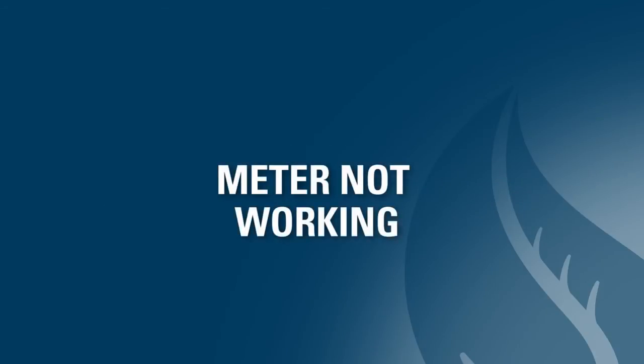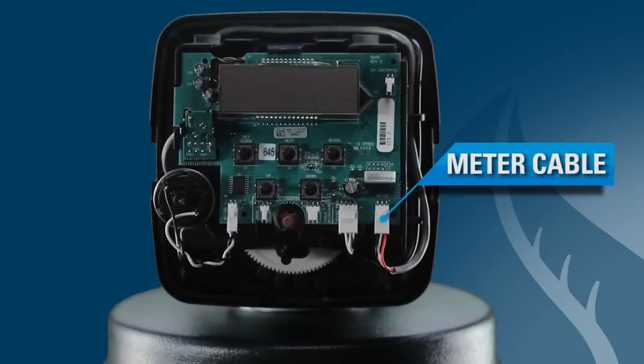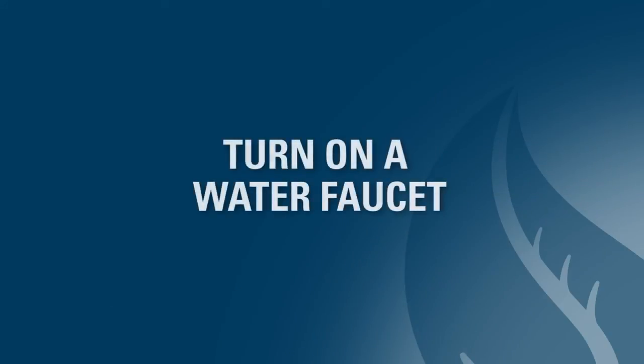Finally, confirm that the valve's flow meter is working. To do this, first ensure that the meter cable is securely attached to the PC board. Next, check to see if the meter is registering water flow. The best way to do this is to turn on a faucet in the house. Once the faucet is on, check to see if the water flow is registering on the valve.